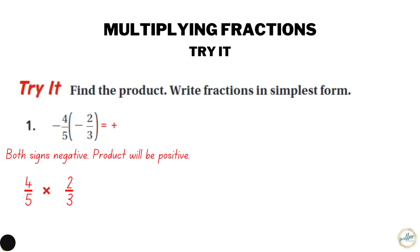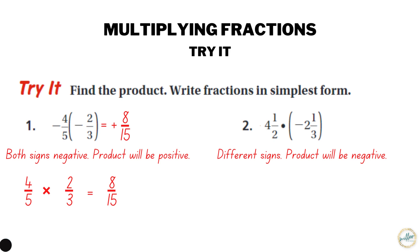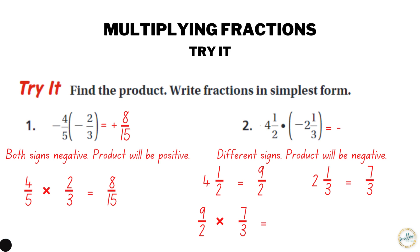Multiply straight across: four times two is eight on top, five times three is fifteen on the bottom — positive eight-fifteenths. Number two: four and a half times negative two and one-third. We have different signs, so the product will be negative. Change four and one-half to an improper fraction: four and one-half equals nine-halves. Change two and one-third to an improper fraction: two and one-third equals seven-thirds.